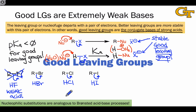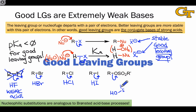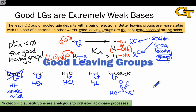Sulfonates are good leaving groups because the conjugate acid of a sulfonate — which is analogous to sulfuric acid — is a strong acid due to the massive resonance stabilization that comes along with deprotonating. The negative charge is spread out over all three oxygens in a sulfonate anion.